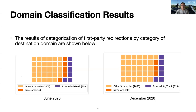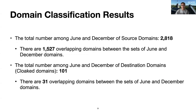The below two figures show the results of categorization of first-party redirections by category of destination domain. We can see external ad or tracking slightly increased between June and December from 509 to 530, and the same organization decreased from 416 to 249. The total number of source domains across June and December is around 2,800, with around 1,500 overlapping domains between the two sets. The total number of destination domains — which are cloaked domains — is 101, with 31 overlapping domains between the two sets.